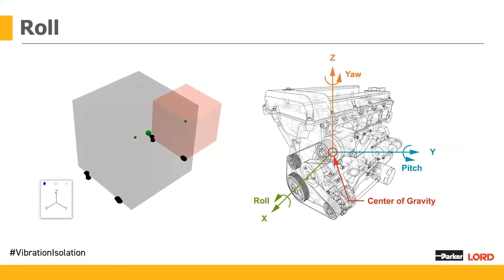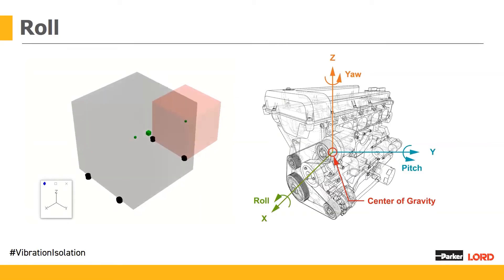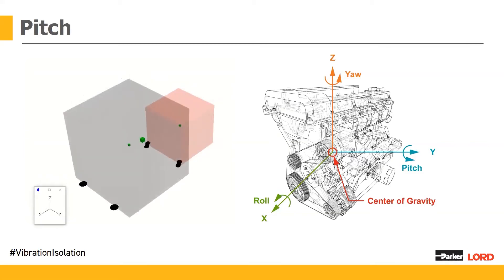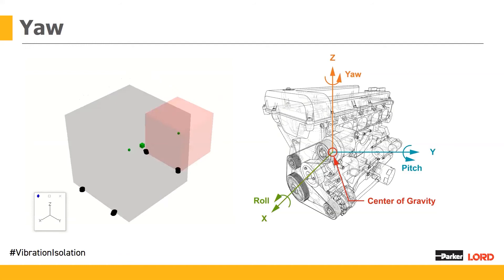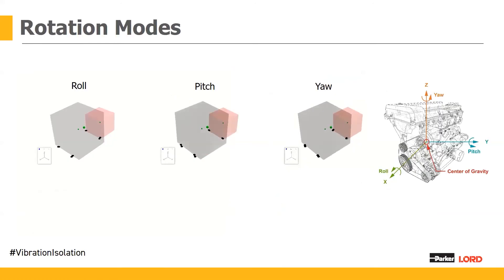Items four to six are the rotation modes — roll, pitch, and yaw — which are rotations about each one of those axes. Roll is rotation about the X axis, pitch is rotation about the Y axis — forward and back — and yaw is rotation about the Z axis, the vertical axis. You can see the effect that each of these has on each mount configuration. This becomes important as we look at the primary disturbances from the engine.